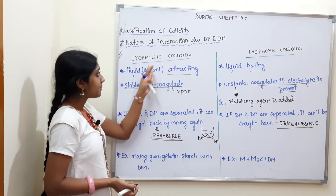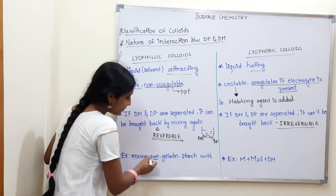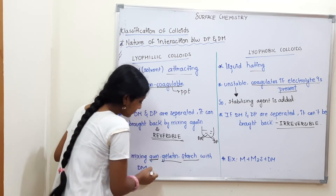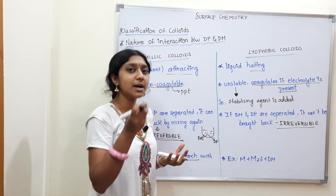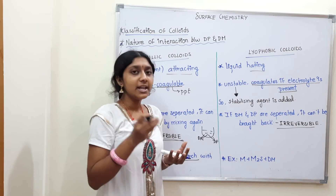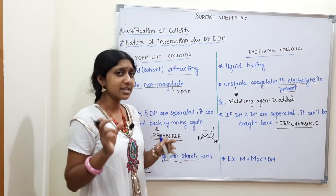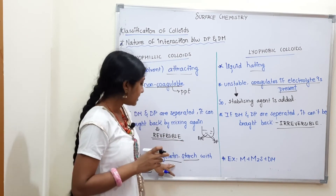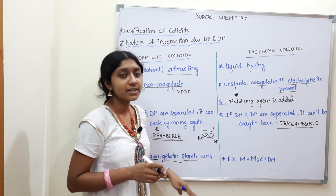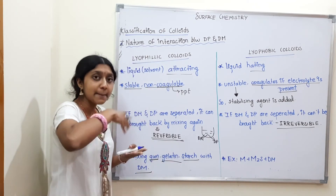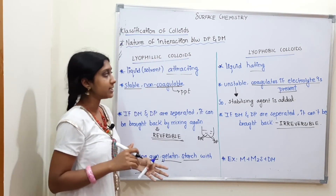Examples of lyophilic colloids: when gum, gelatin, or starch is mixed with the dispersed medium, they form lyophilic colloids. Gelatin and gum dispersed in a medium are classic examples of lyophilic colloids.